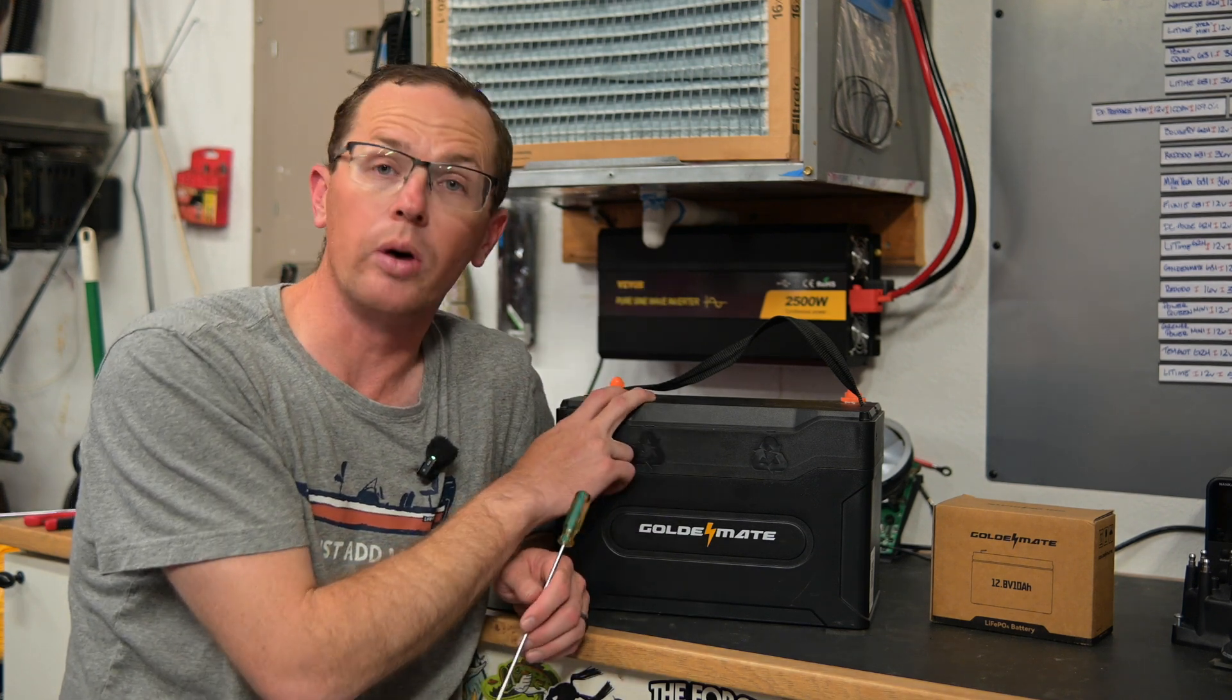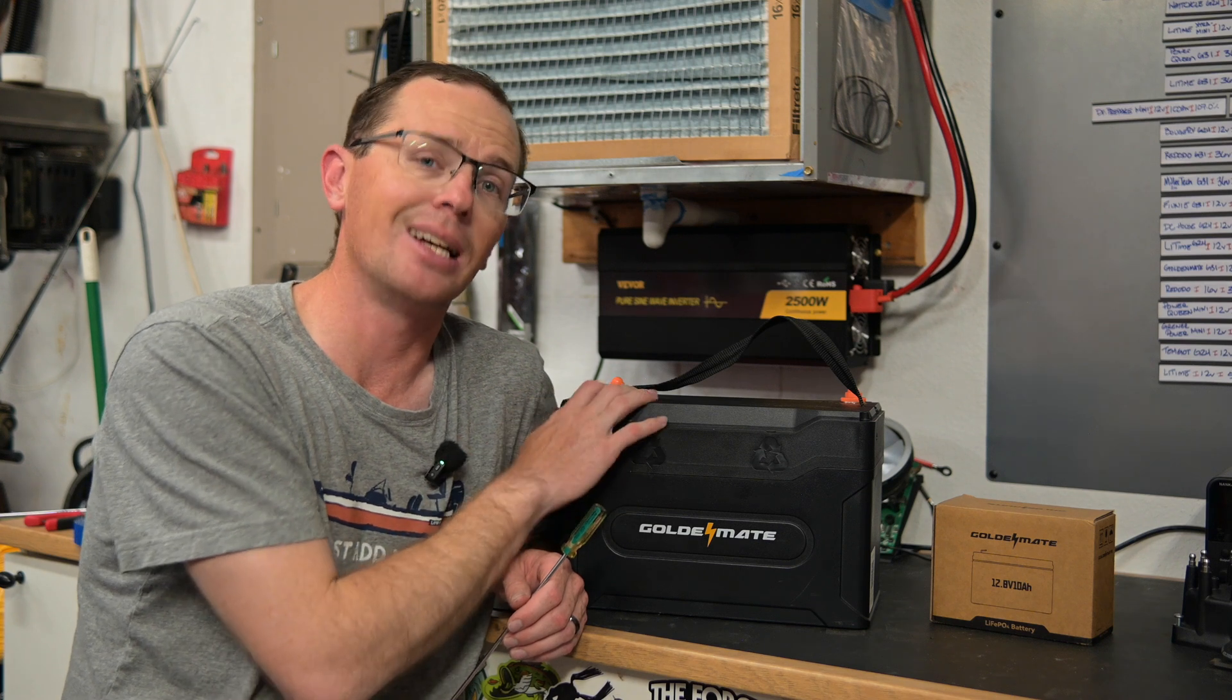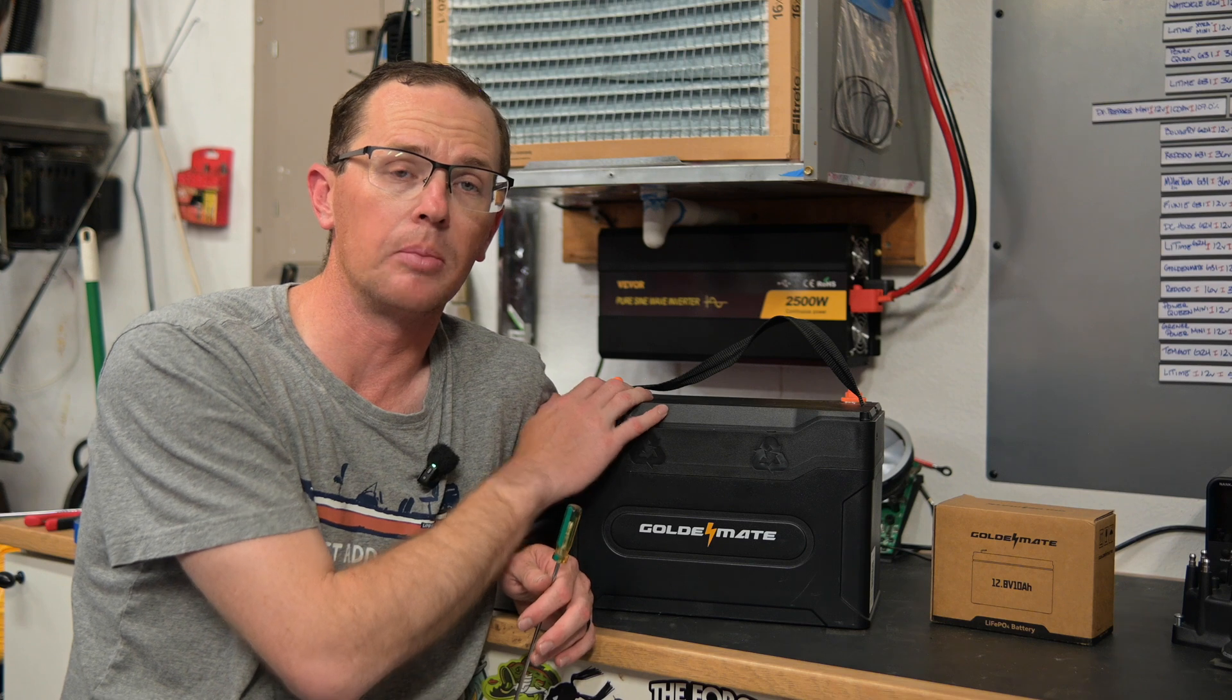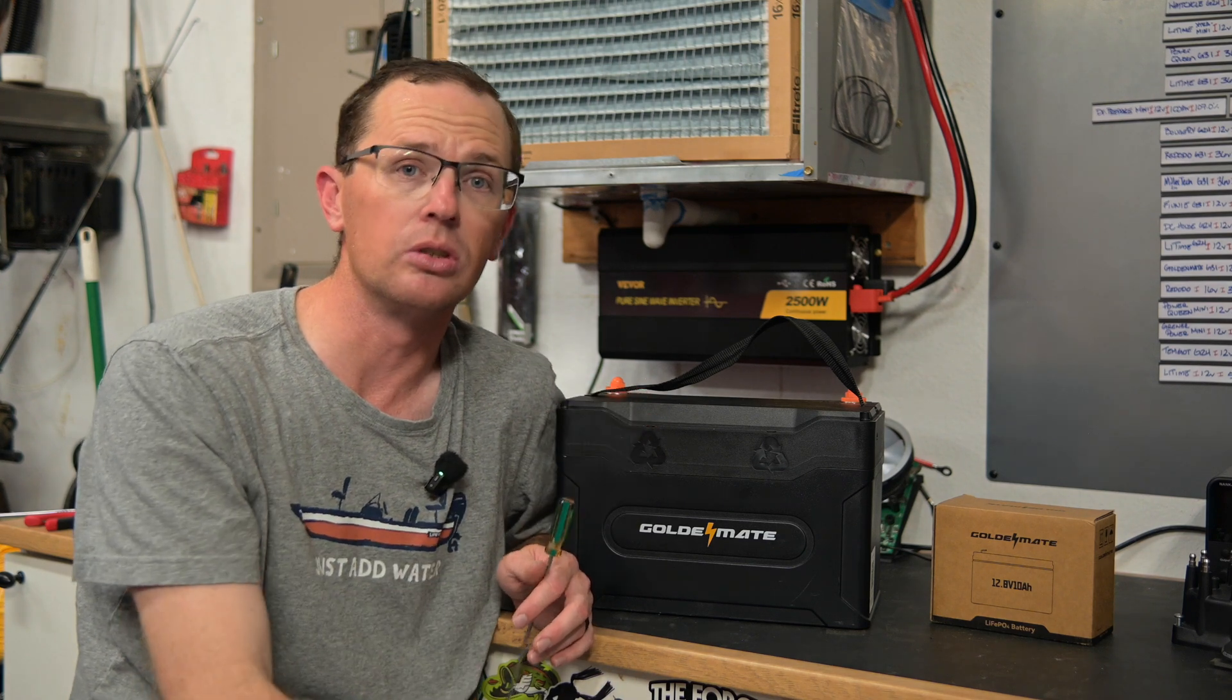100 amp hours is 1280 watt hours, lots and lots of power. Will run a 12 volt trolling motor for a very long time. 24 volts at 100 amp hours is a ton of power, so is 36 volts if you want to put something in series to make more power.